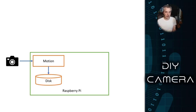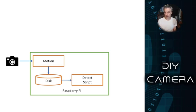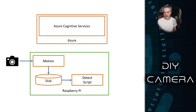Once it gets the results back, it will restart observation of the disc, grab another file, send it off, and so on. So we're going to have that script watching for changes on the disc. The disc then notifies the detect script that something was written. From there, the detect script calls Azure Cognitive Services — the suite of services I'm using for object detection — which is in the cloud.